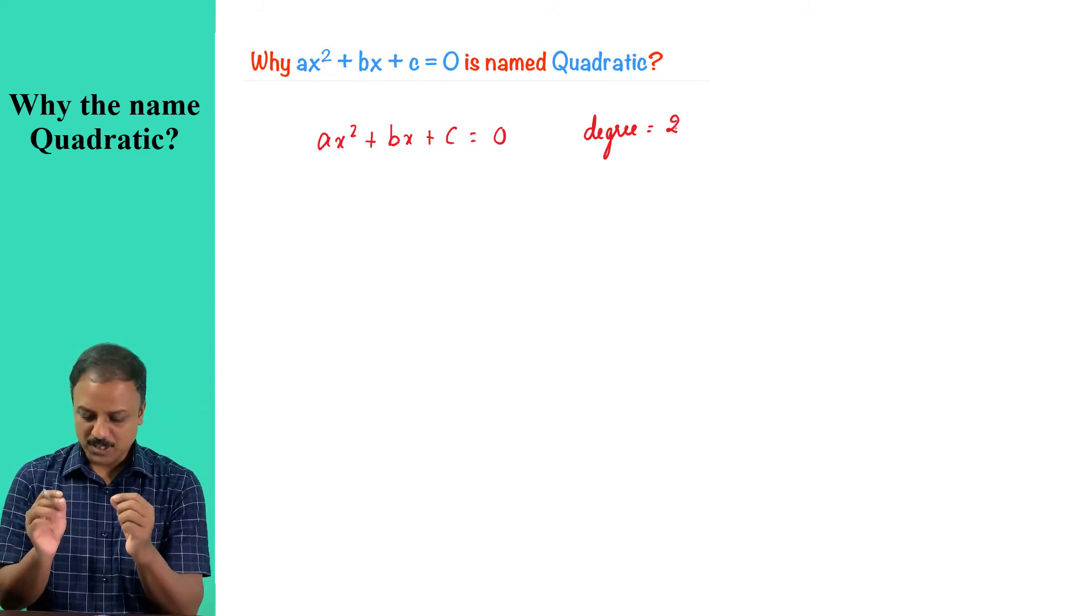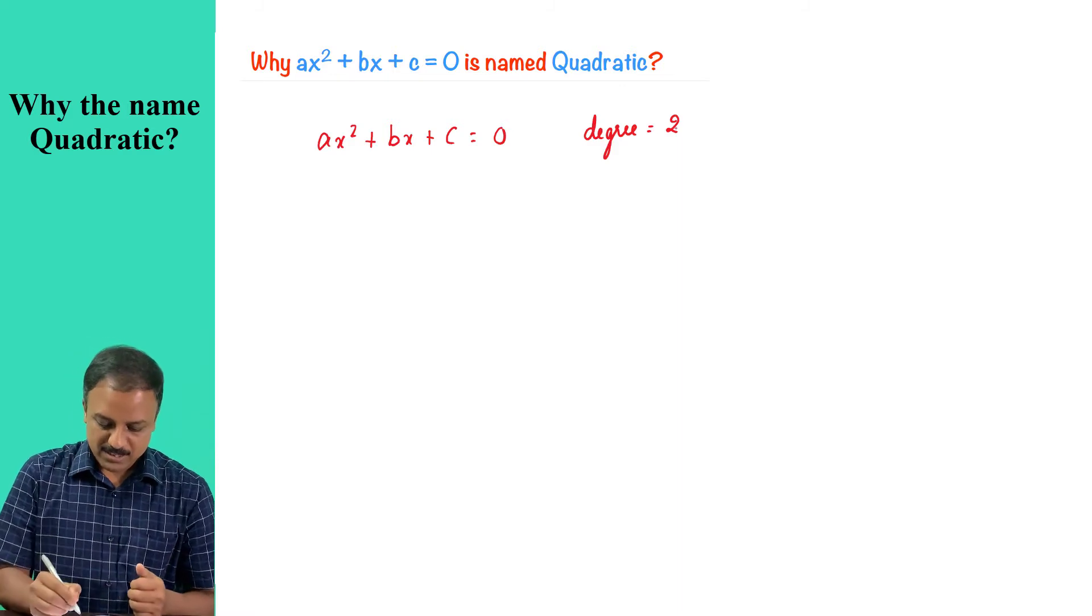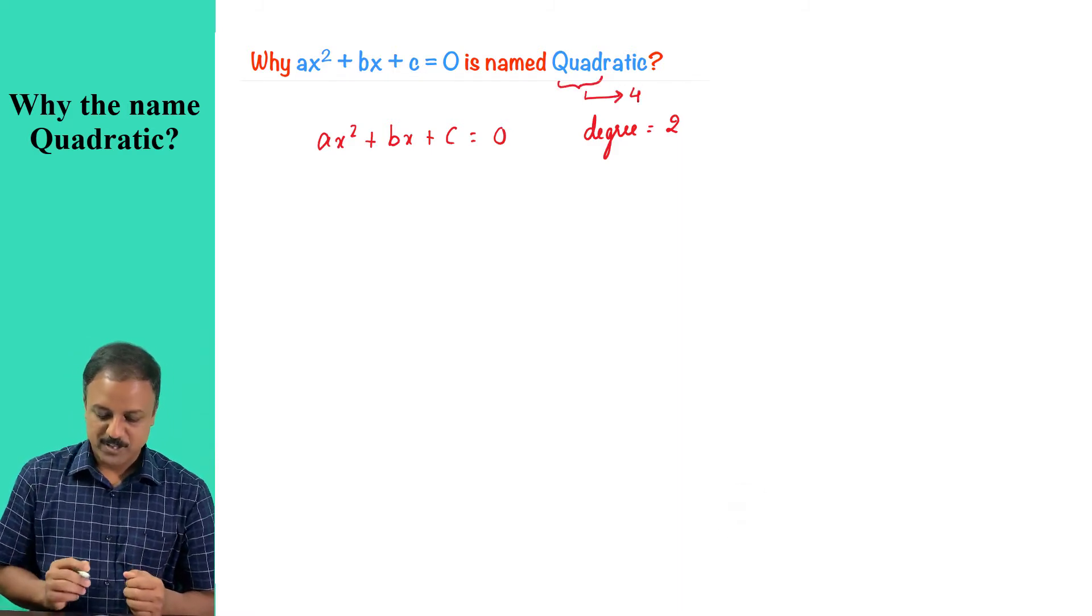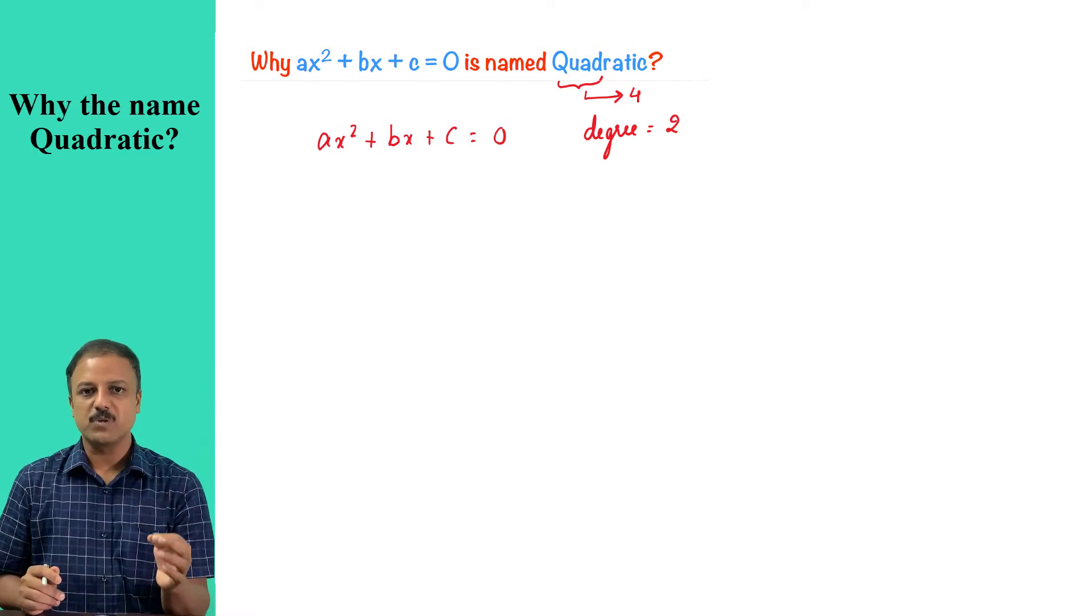Now if you look at the word quadratic, this term quad means it is four. So anything related to number four is called quad.